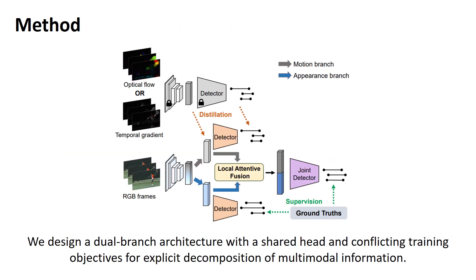This is an instantiation of our cross-modal distillation. For explicit decomposition of multimodal information, we propose a dual branch architecture with a shared head and conflicting training objectives. Specifically, the appearance branch takes supervision signals from the ground truth, while the motion branch is guided by the motion teacher through distillation losses.